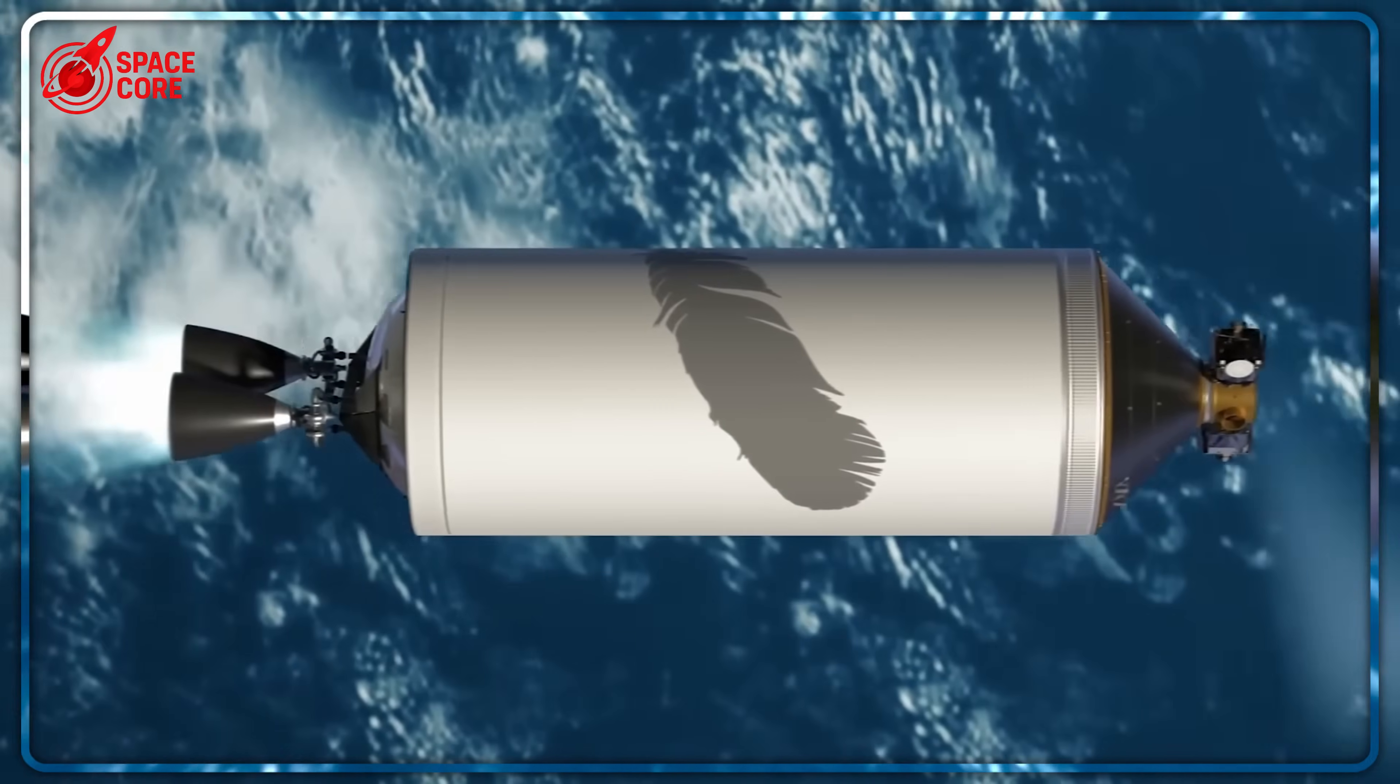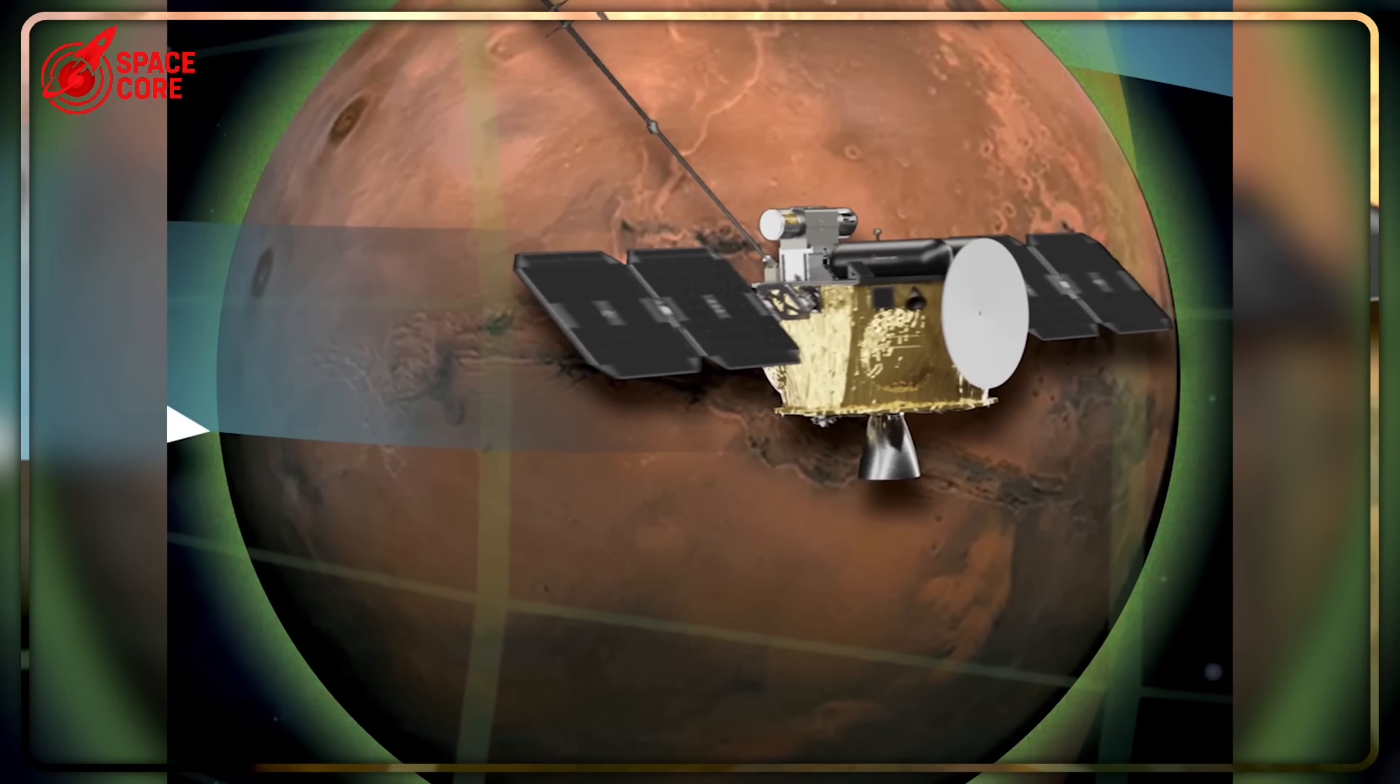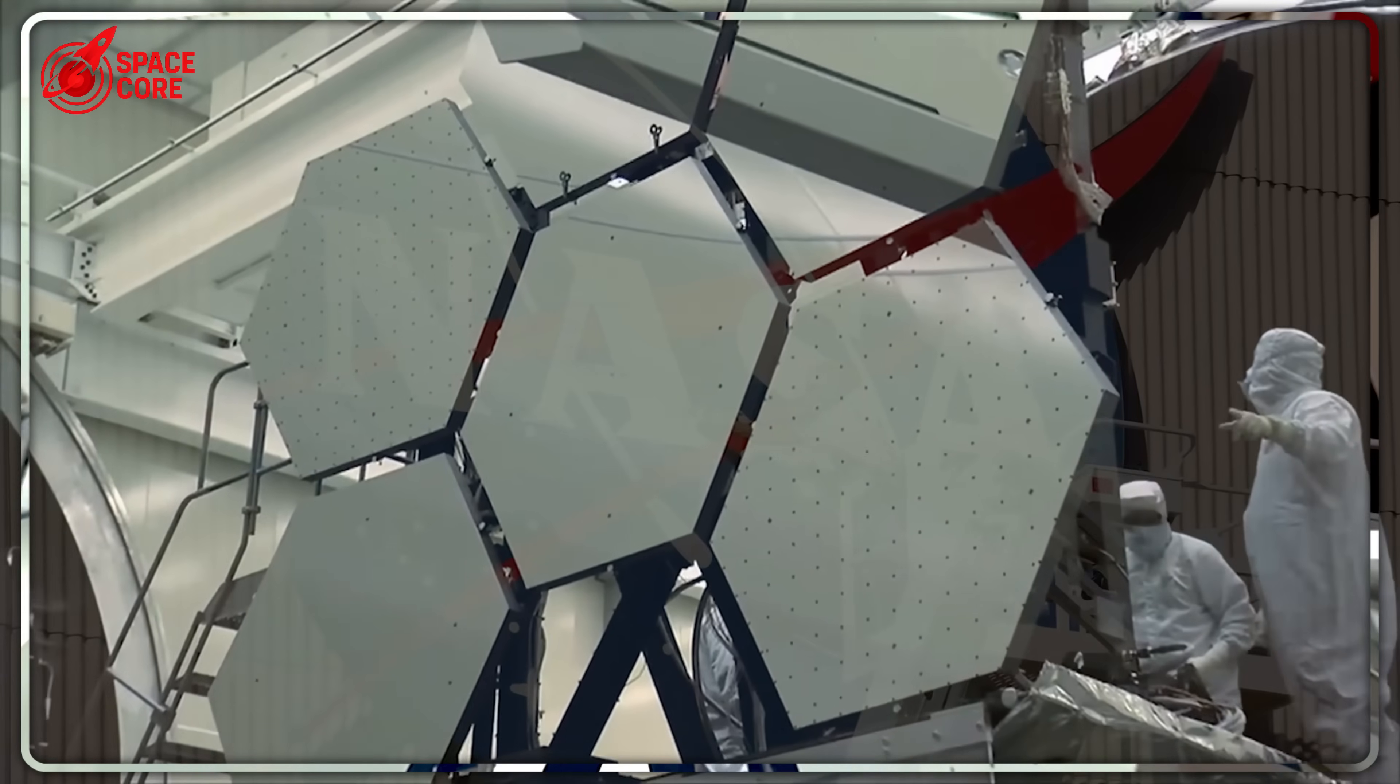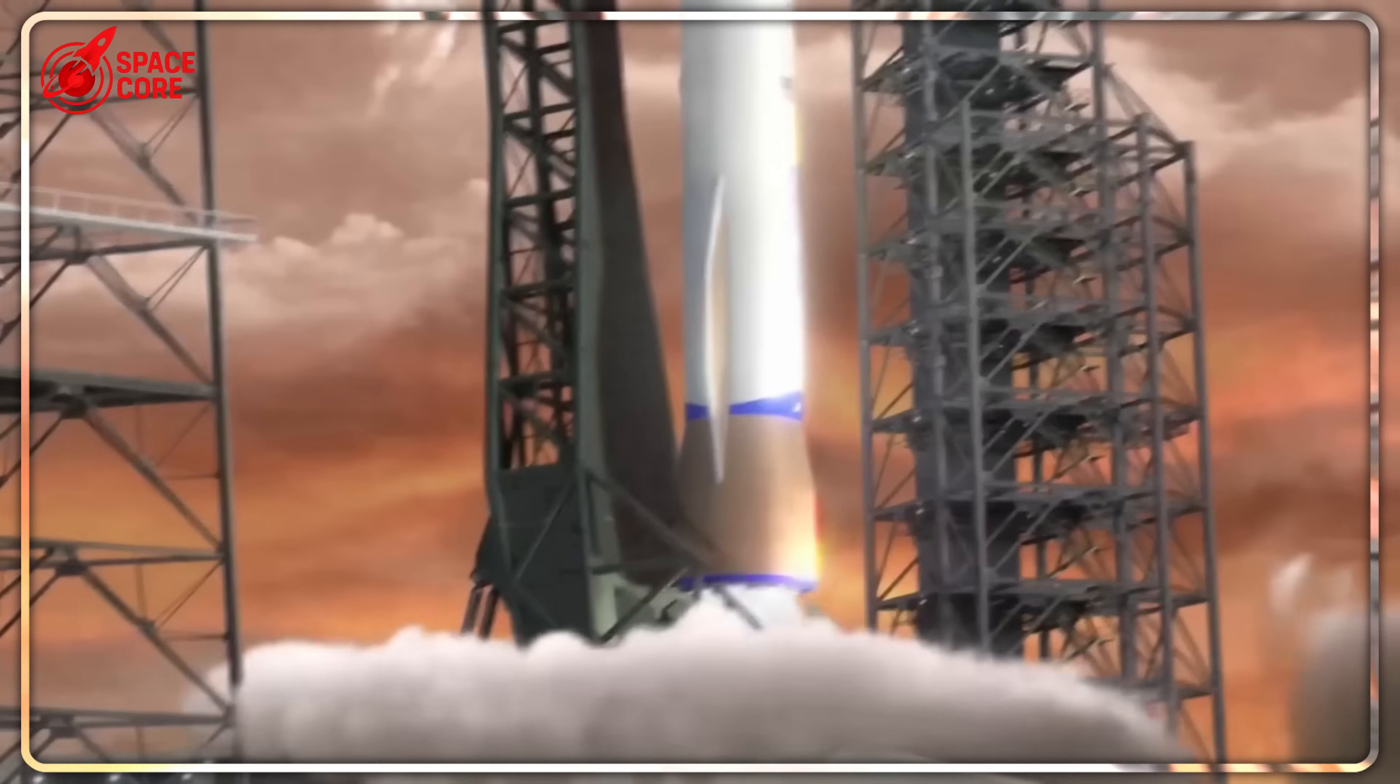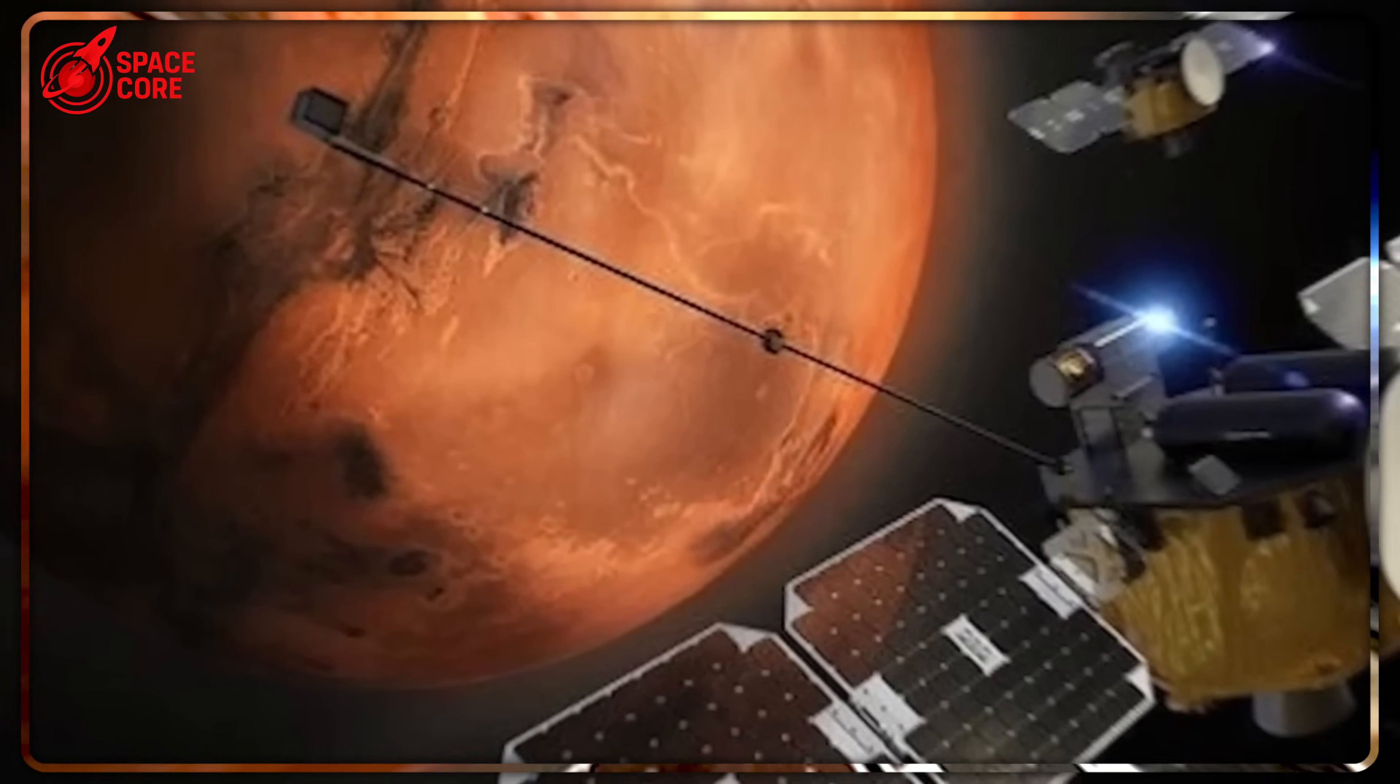Every time Blue Origin fires up those BE-4 engines for testing, it costs them $5 million. $5 million for 10 minutes of testing. And they've done this over 150 times in three years. That's $750 million spent just figuring out why their engines don't work. Three quarters of a billion dollars with no solution. Compare that to SpaceX. Their Merlin engines work so reliably that they can land a booster, refuel it, and launch again in three weeks. SpaceX has completed over 300 missions, while Blue Origin can't get seven engines to fire consistently for one flight.